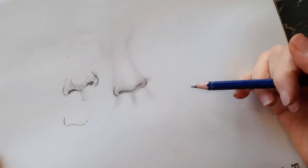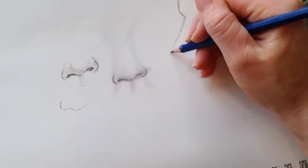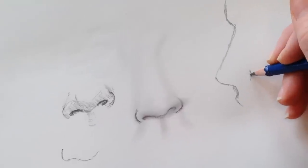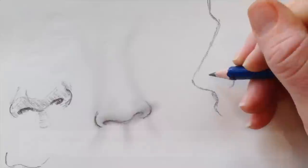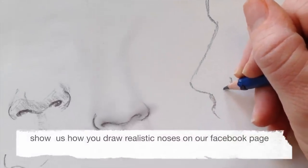If you want to draw a realistic nose from the side, begin by looking at a nose - pick up a magazine or take a picture of yourself. Draw the profile of your nose and figure out where the nostril is. Your nostril doesn't start at the front but instead starts a little bit back.